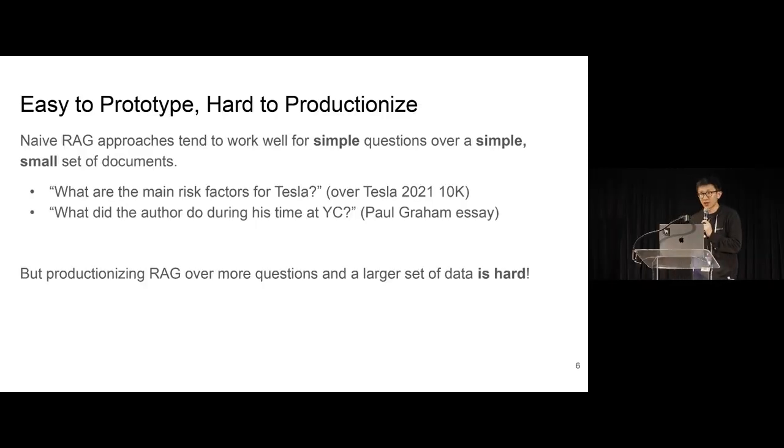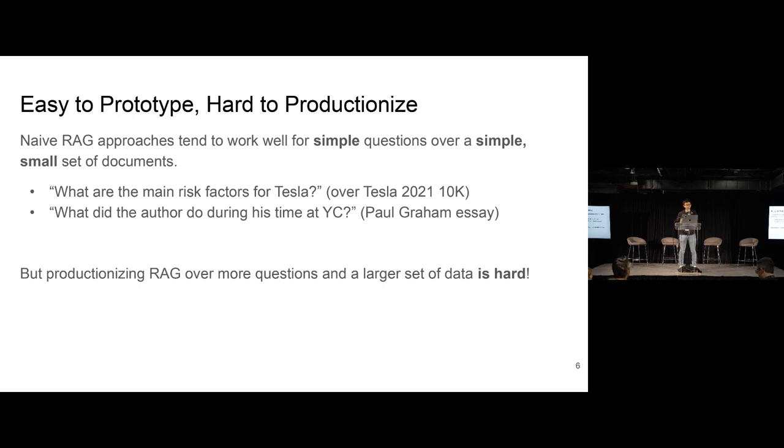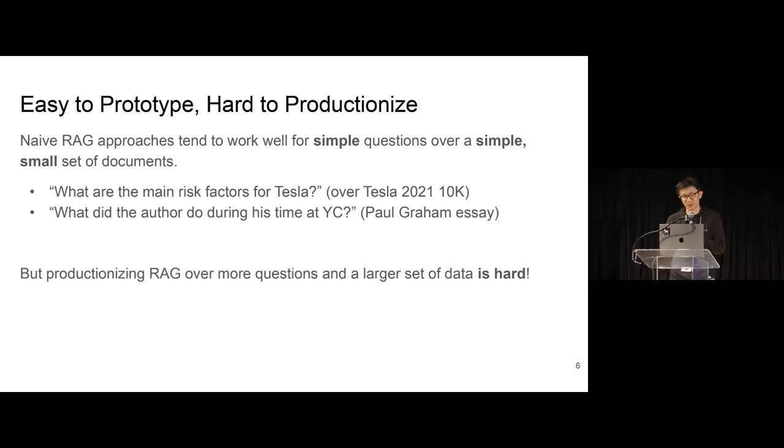So for a lot of RAG, naive RAG approaches tend to work well for relatively simple questions over a simple small set of documents. If you have like five PDFs, and you want to ask a question about a specific fact in one of those PDFs, naive RAG generally works pretty well. Embeddings are decent these days. They'll be able to surface the right chunk for you. And then LLMs can generally synthesize the right answer given the chunk in the context.